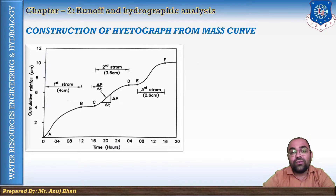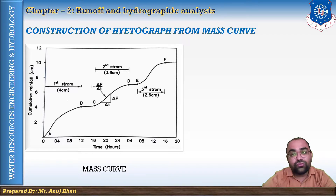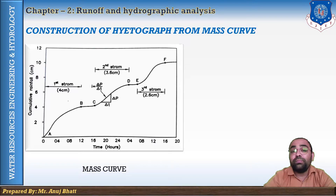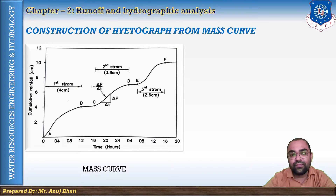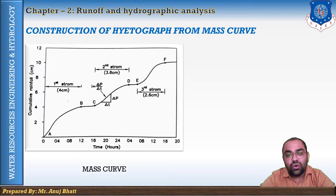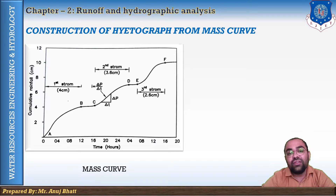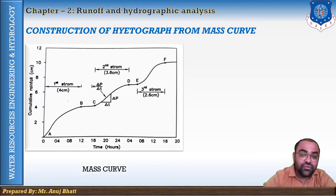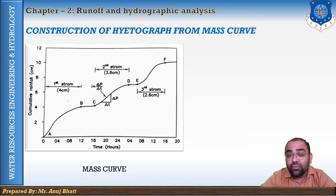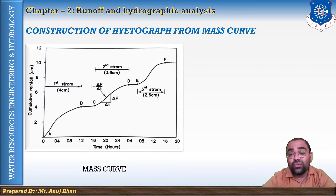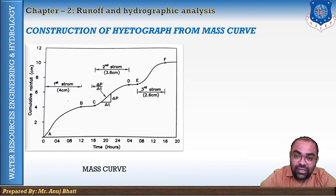Now we will see the construction of a hiatrograph from a mass curve. A hiatrograph is generally derived from the mass curve, and as discussed, it is represented as a bar chart. A hiatrograph is constructed from an average mass rainfall curve of the catchment area. A graph showing the cumulative depth of rainfall against the time, plotted in chronological order, is known as the rainfall mass curve.